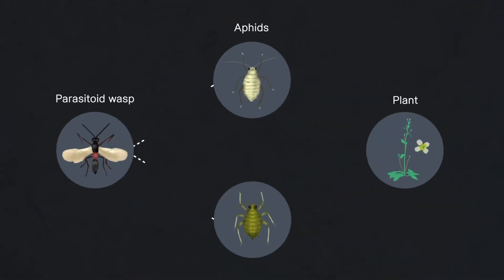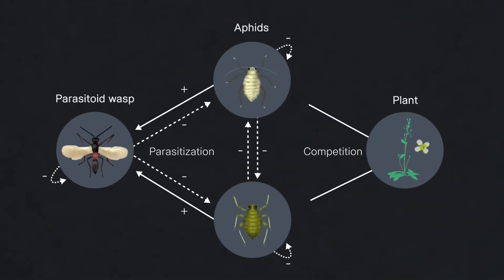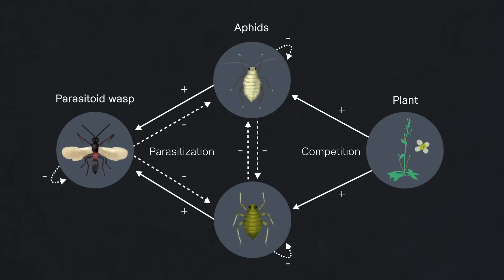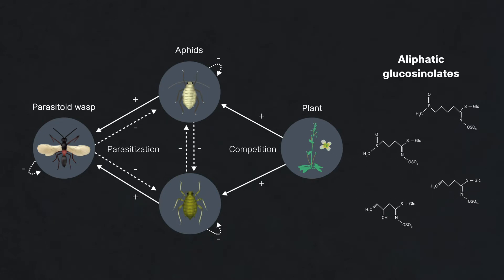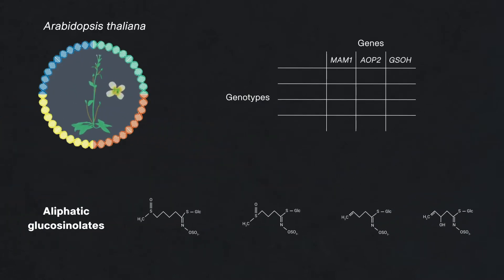The wasp parasitizes the aphids. These aphids compete for their shared resource Arabidopsis thaliana, and these interactions are mediated by a group of specialized metabolites called aliphatic glucosinolates. We used four Arabidopsis genotypes that recreate natural variation in null and functional alleles at three genes that control the biosynthesis of aliphatic glucosinolates.